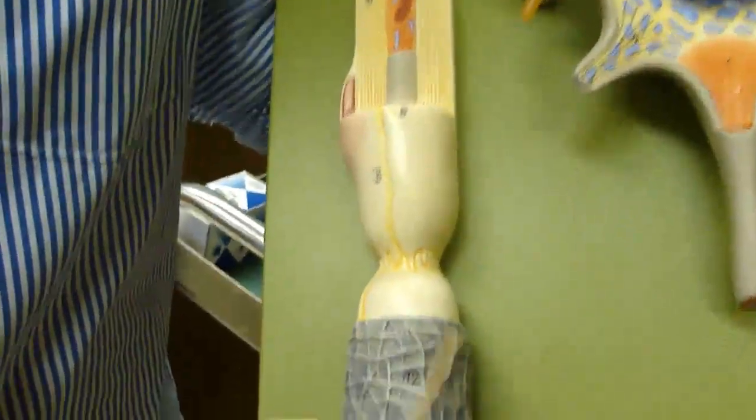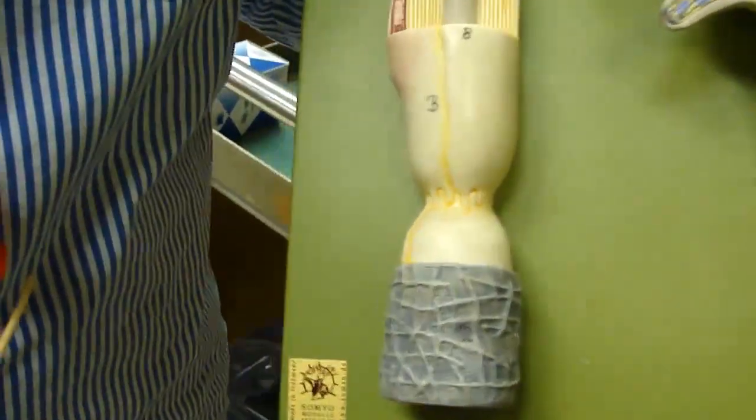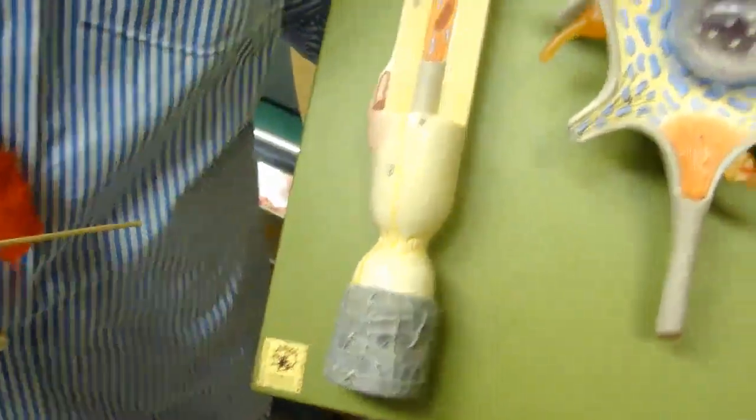So down here we got this one, so it's neurolemma, it's a protection layer that wraps around the entire axon over the Schwann cell.